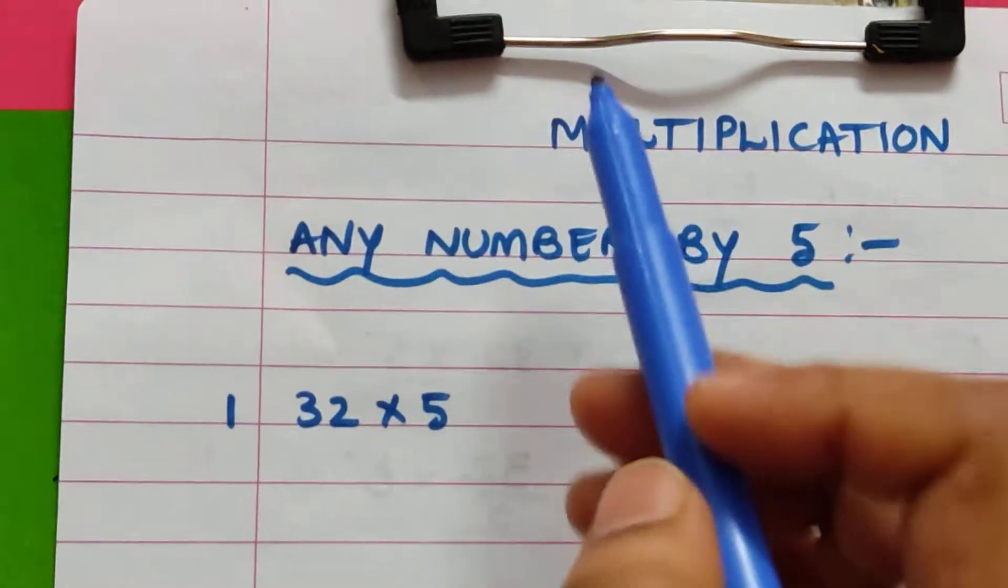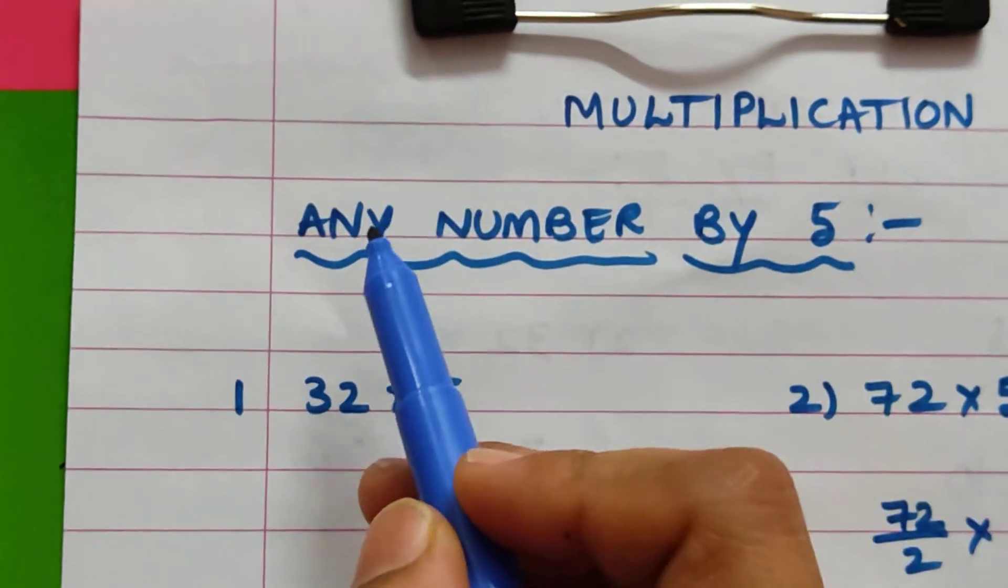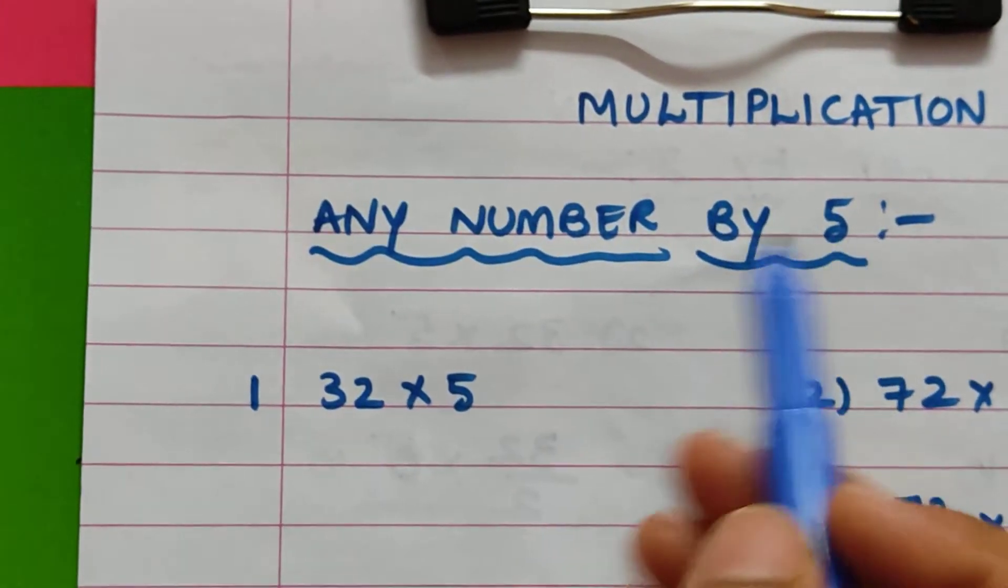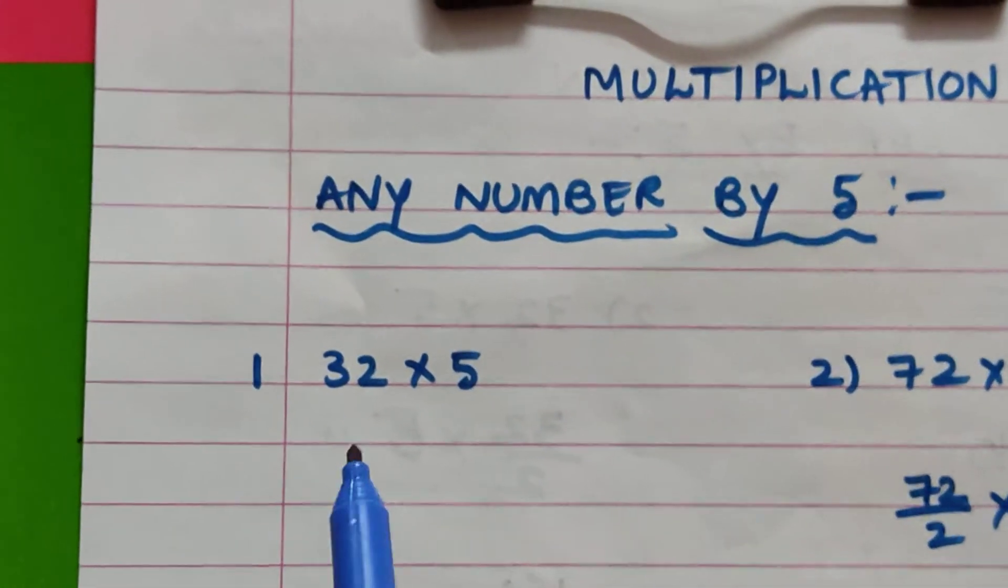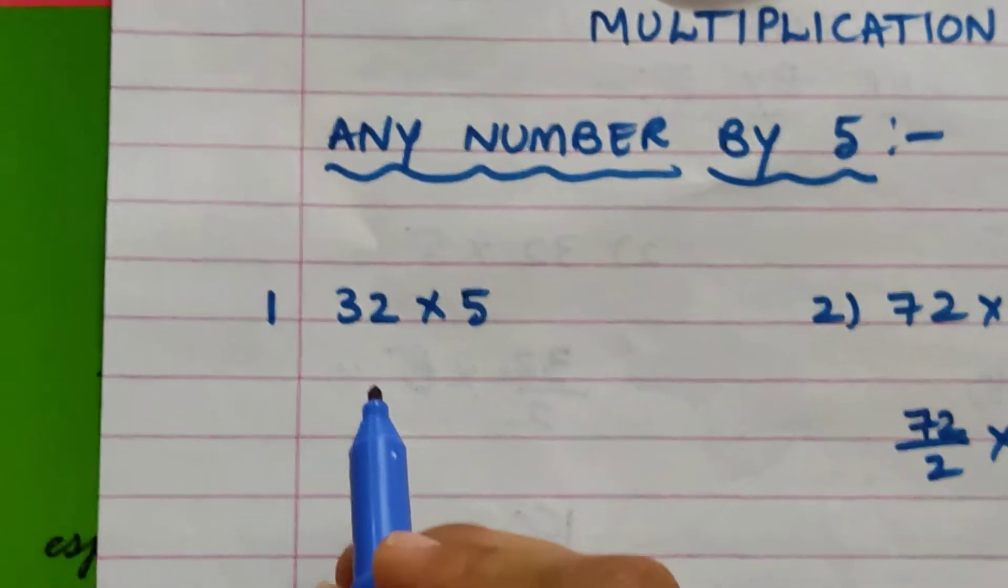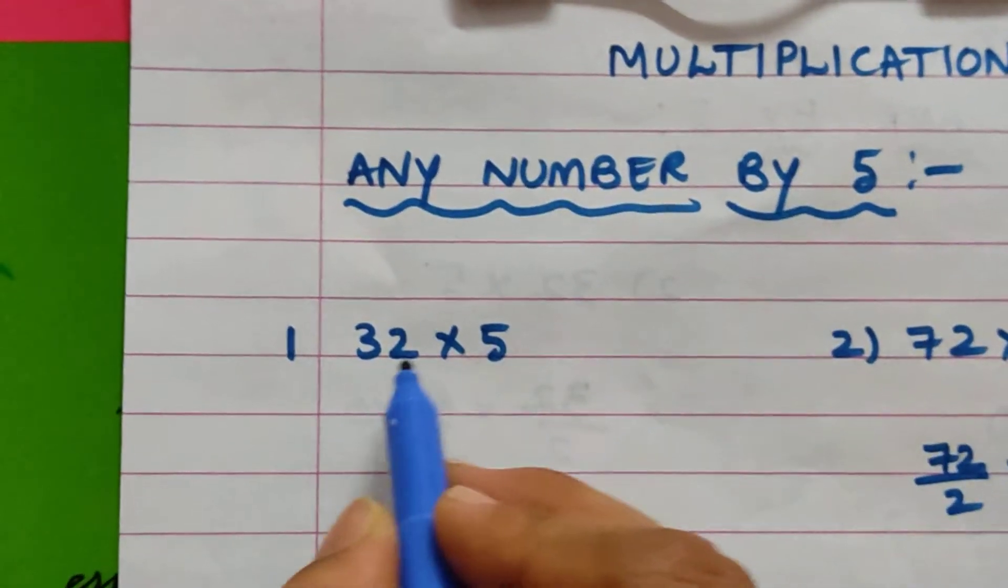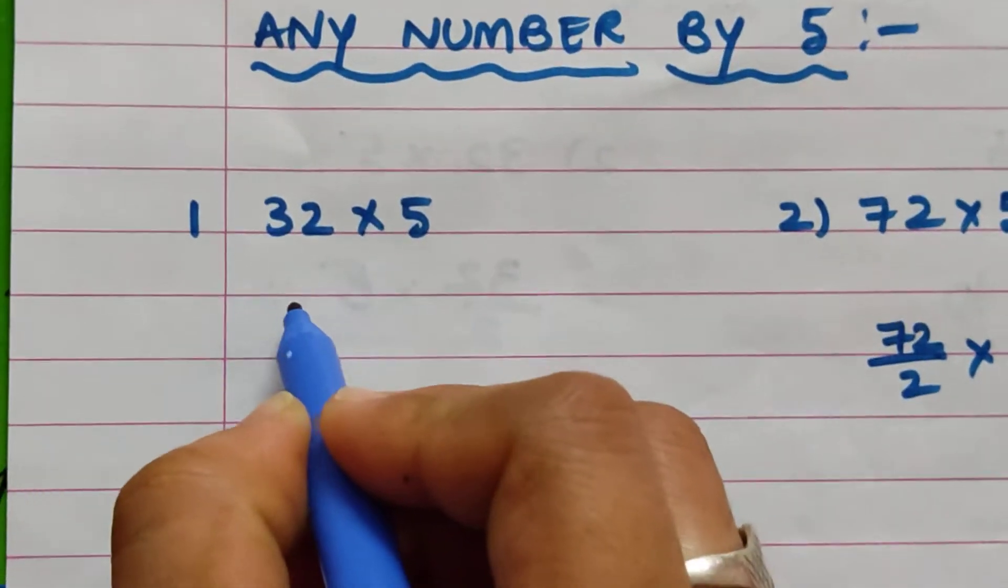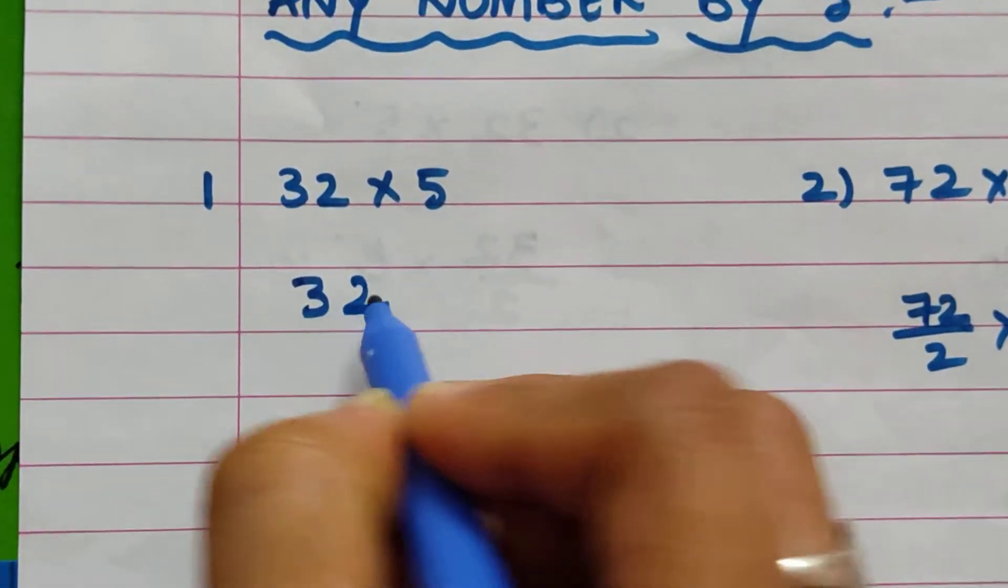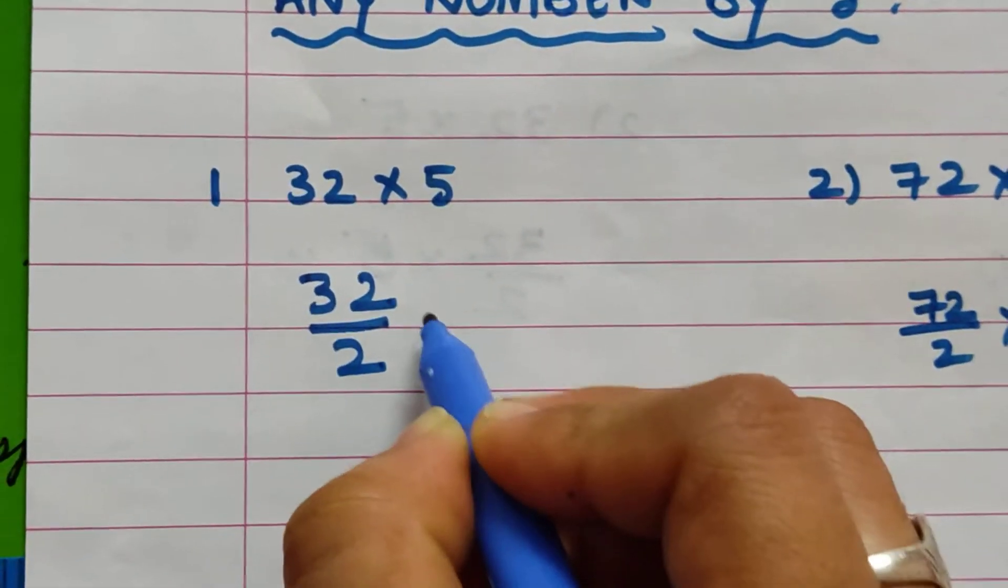Hi everyone, today I am going to discuss a multiplication shortcut method for any number by 5. Very easy, within seconds you can solve. For example, 32 into 5. So here what we have to do: 32 by 2, we have to...